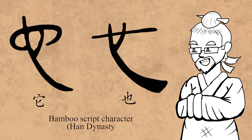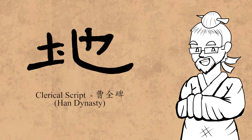During the Han dynasty, 它 and 也 were not only homophones, but also graphically almost indistinguishable. Which is probably why, by the end of the Han dynasty, the character had largely settled into its modern form with 也 as phonetic, as illustrated by the 曹全碑.